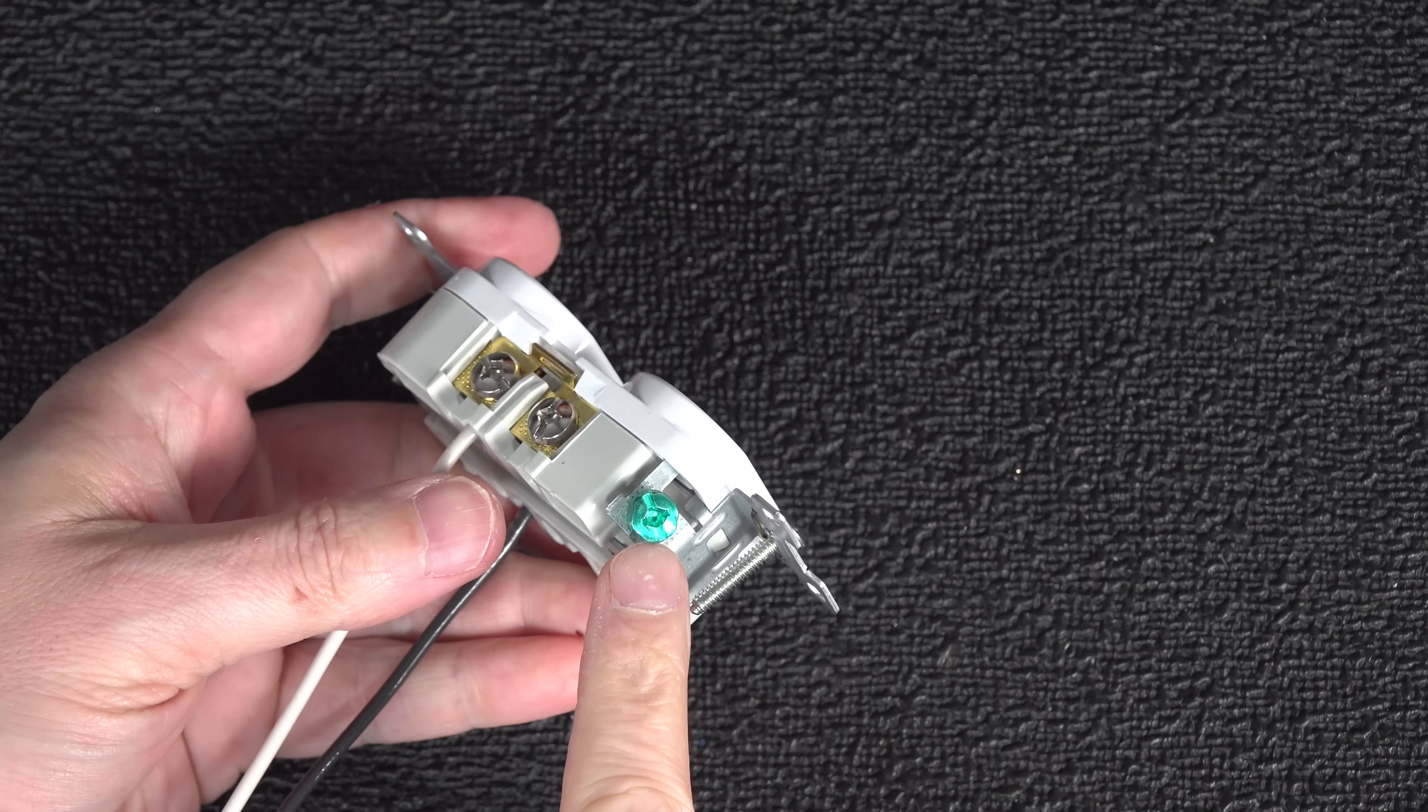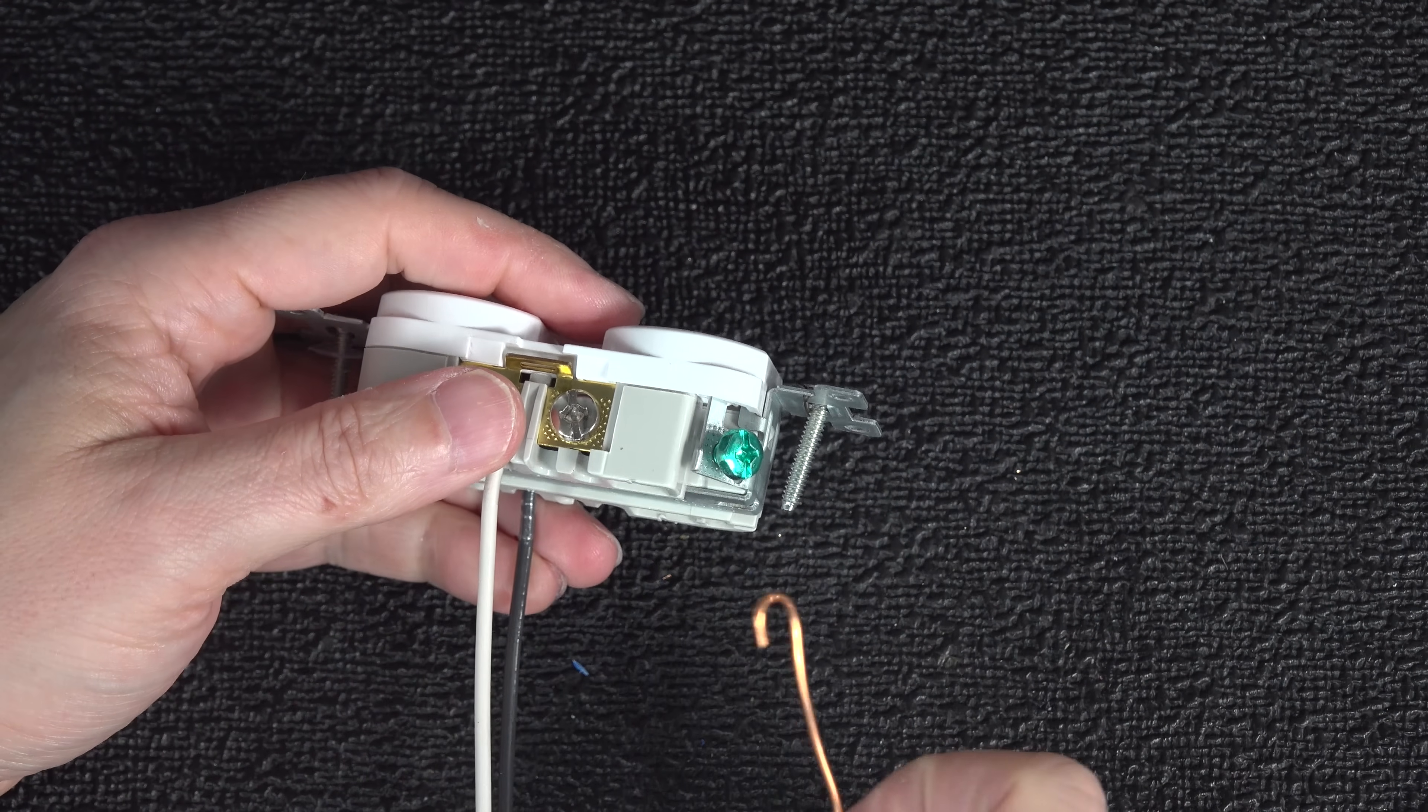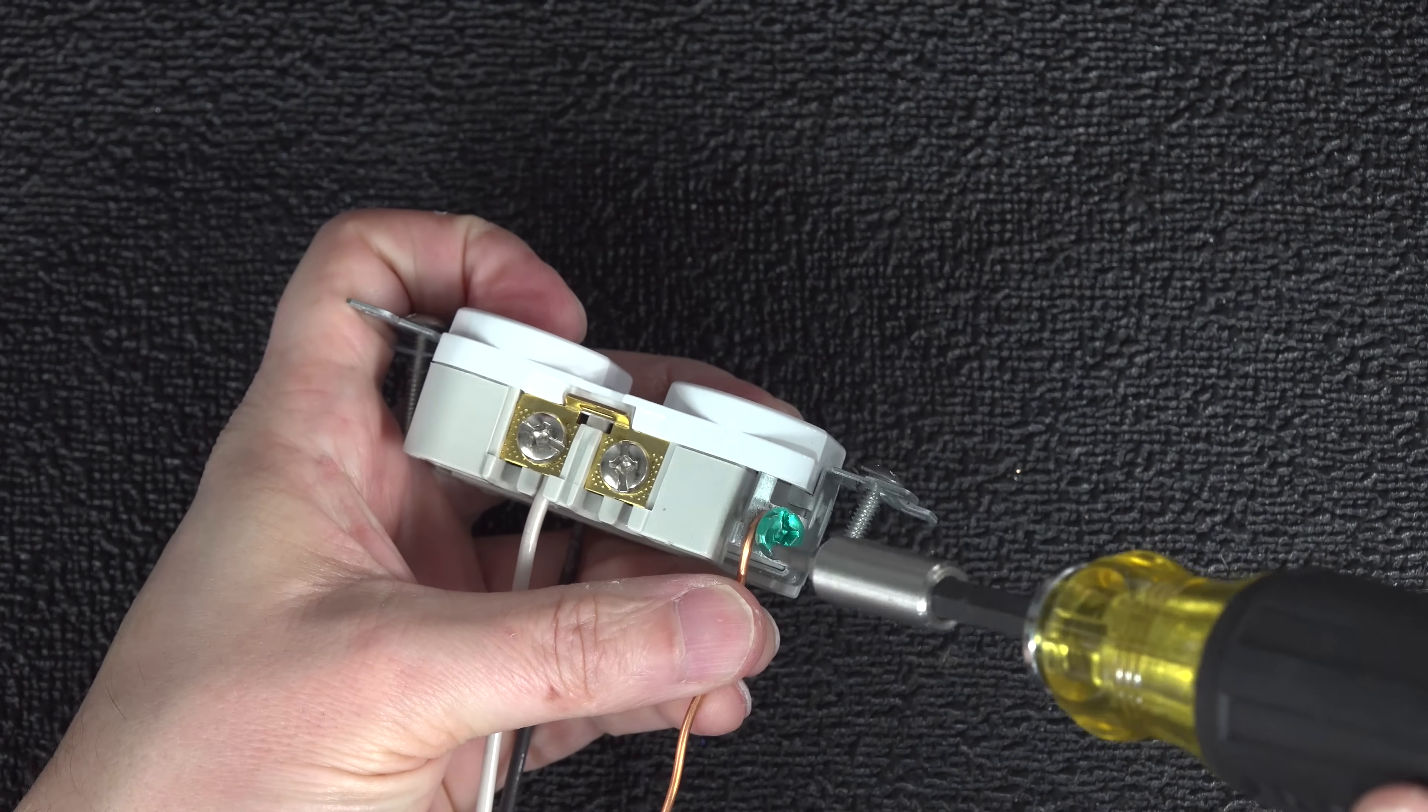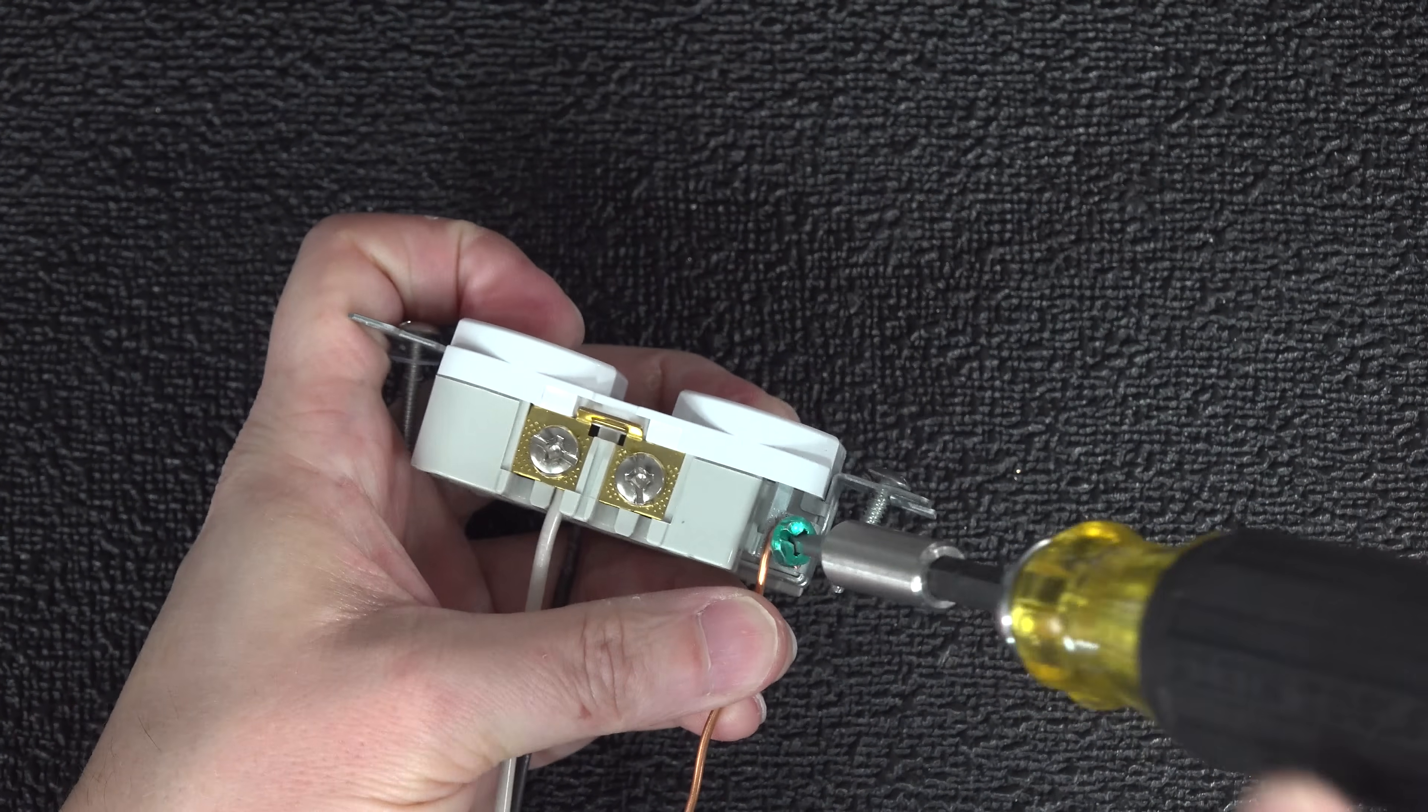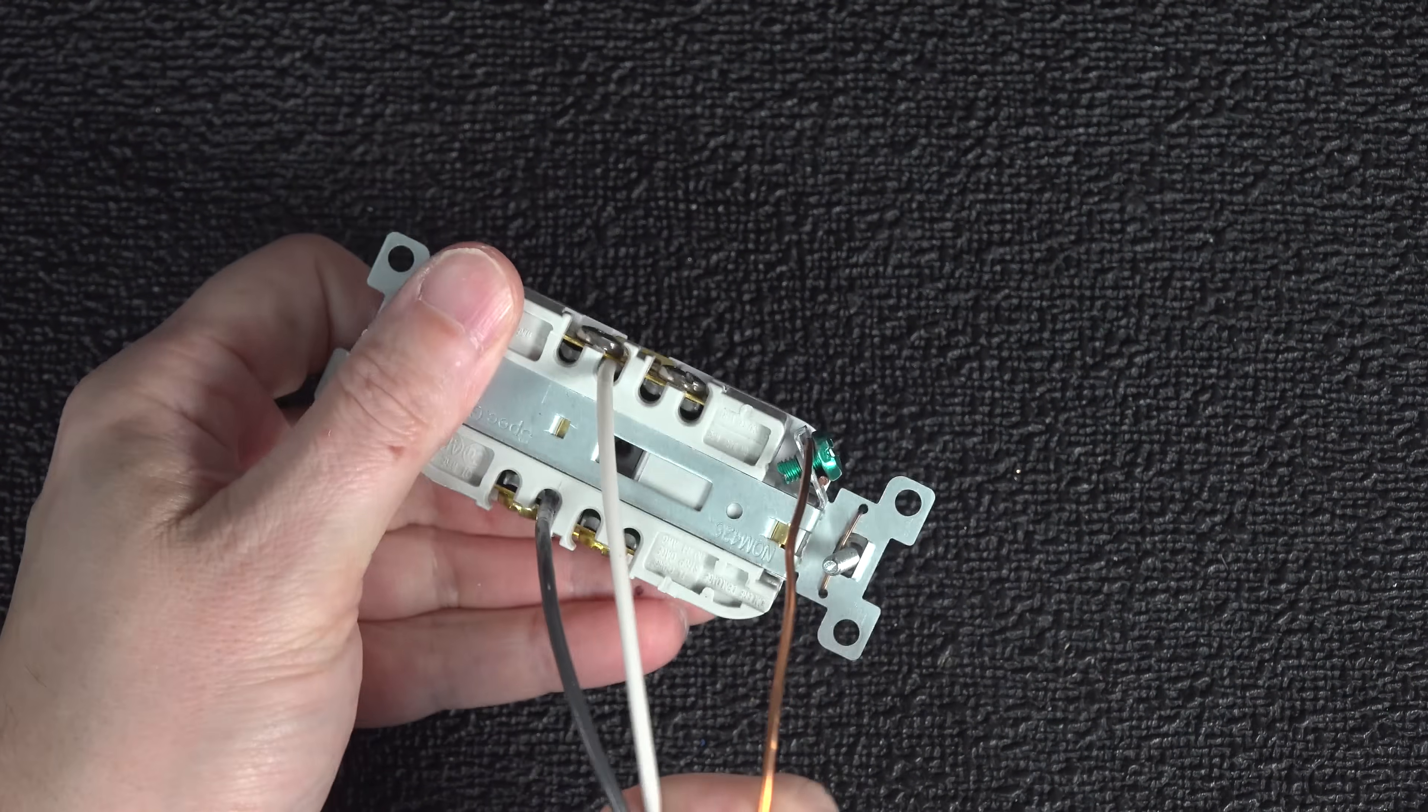The last wire you need to connect on any outlet is the ground screw. In the US that's always going to be indicated by a green screw and unfortunately there is a bit of bad news. They don't seem to use that clamping mechanism whenever it comes to the ground screw. That might be a code requirement but either way you will still have to make a hook whenever you connect anything to the ground terminal.